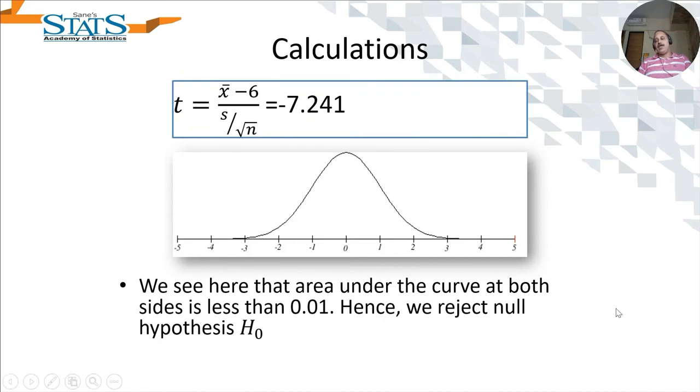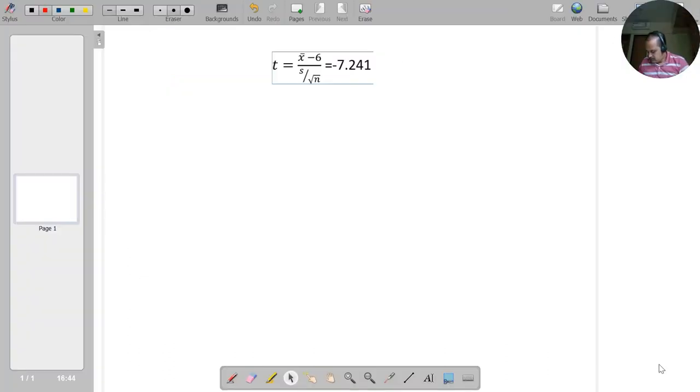Now the calculated test statistic seems to be minus 7.241. And you see this is the t-distribution graph. This being our value, let's consider the graph of t-distribution.